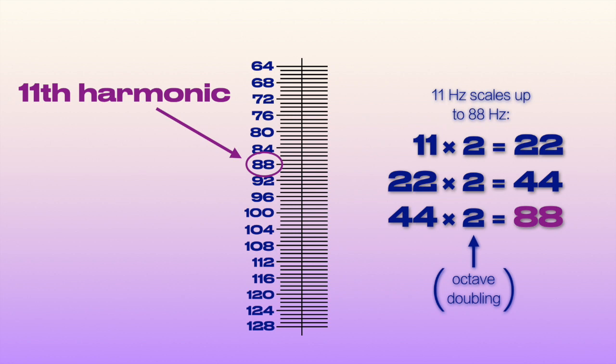The 11th harmonic is the note of F sharp, and it scales up through its octaves to 22, 44, 88, and 176 Hz, never hitting 111.